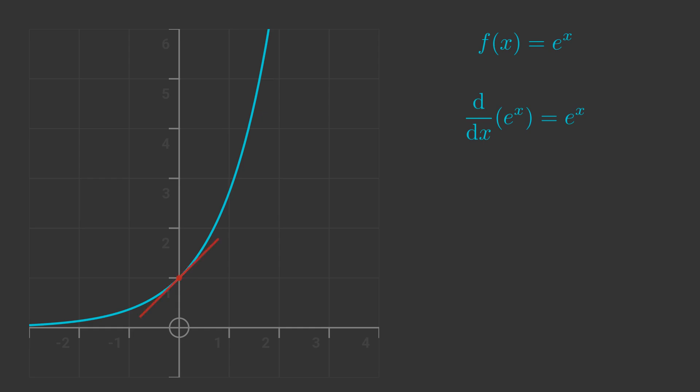For example, when x is 0, the value of the function is 1, and the slope of the function is also 1. When x is 1, the value of the function is e, which is approximately 2.718. The slope of the curve at that point is also e.